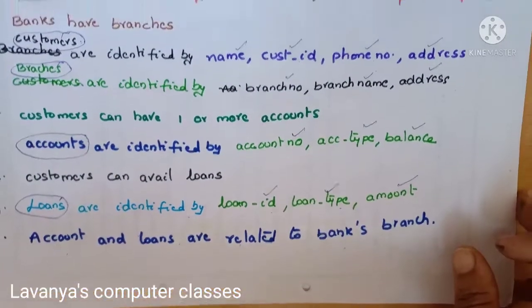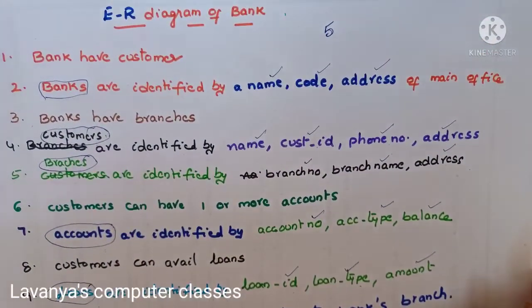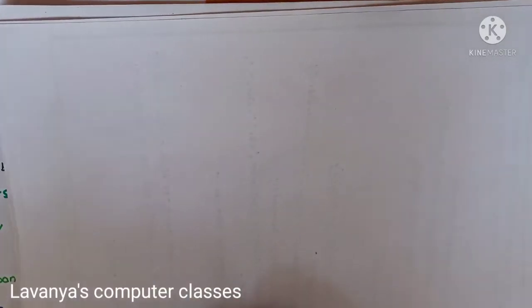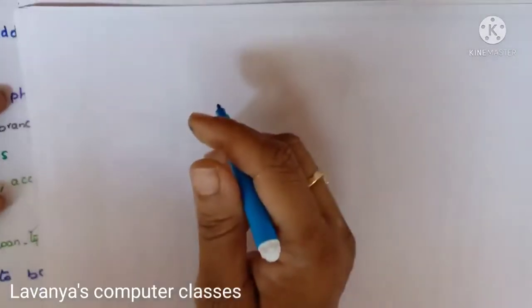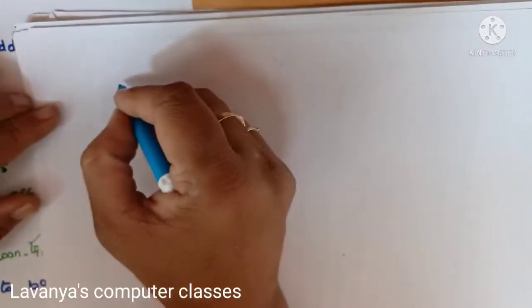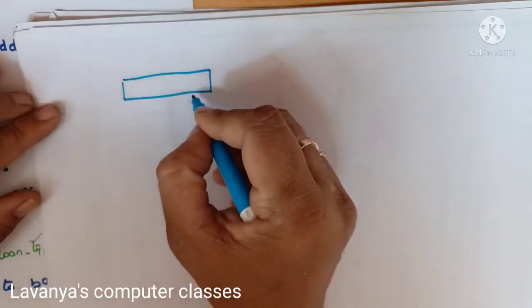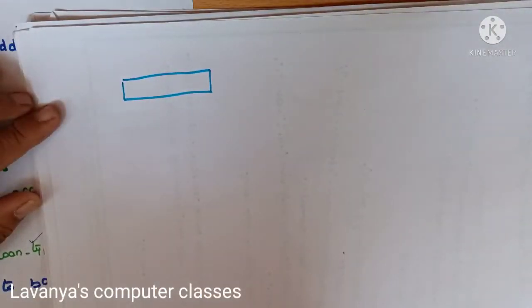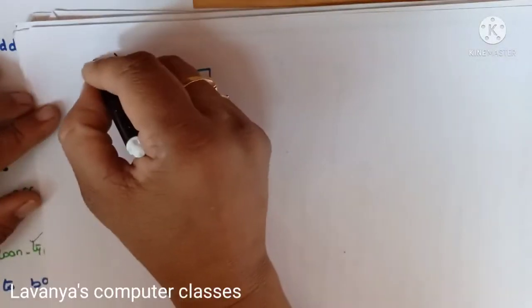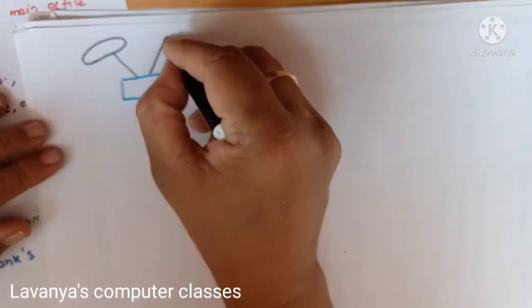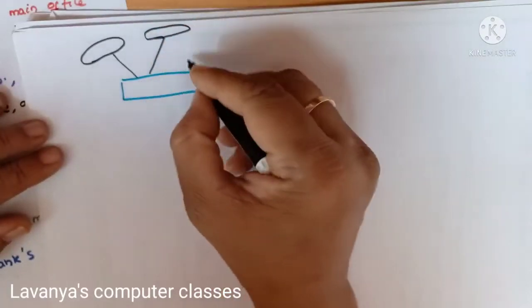Now we are going to draw the ER diagram for the bank. The main entity set is bank, identified by name, code, and address. All entity sets are represented with a rectangle box, and attributes are represented with ellipses. Bank has three attributes: name, address, and code.